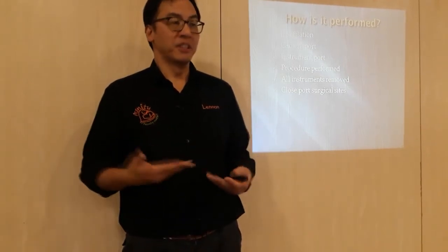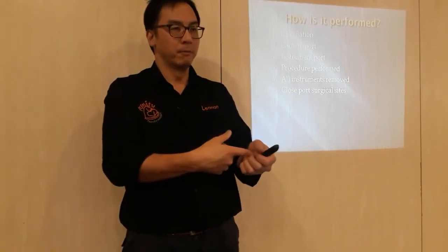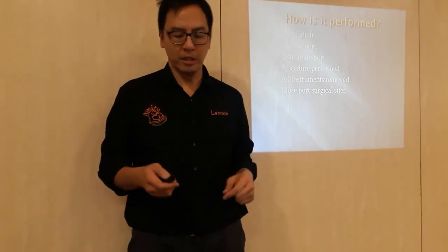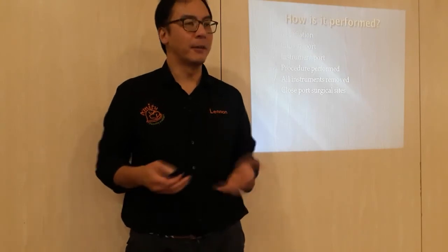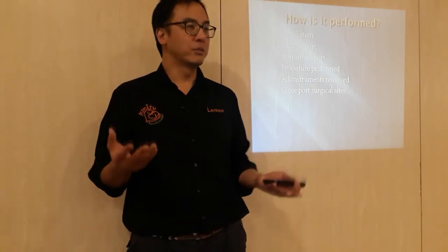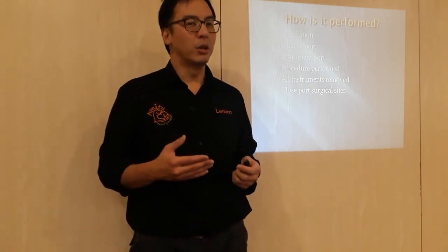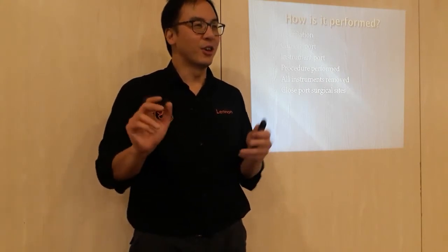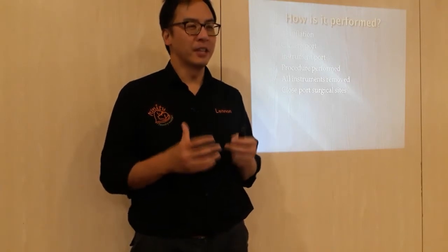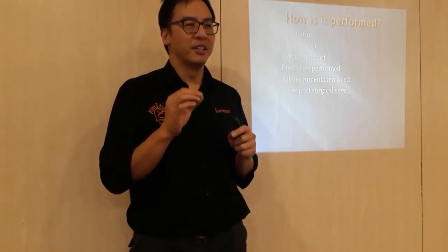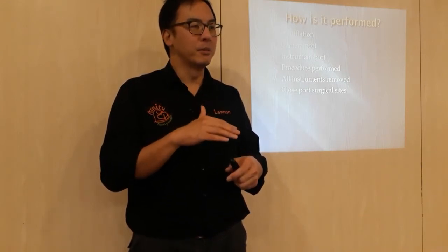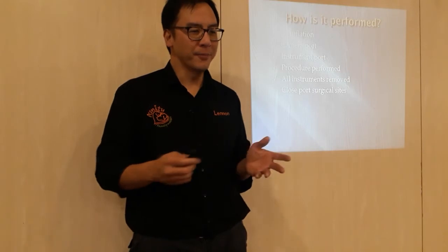If there's no gap you can't see anything — all you'd see is the end of the camera. That's why we put gas inside. In the past they considered using oxygen, but oxygen is flammable, so if you're using coagulating equipment everything could explode — not good. So we use CO2, because it is the least dissolvable in blood, meaning the risk of gas embolism is much lower.